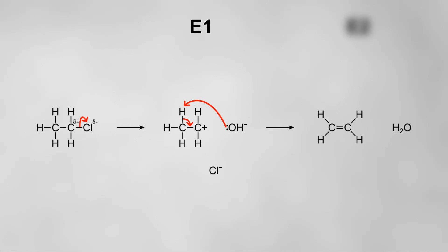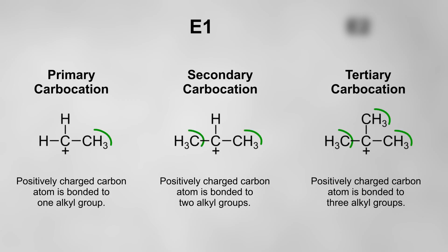Similar to an SN1 reaction, the biggest barrier for an E1 reaction is the formation of the carbocation. Remember, alkyl groups are electron donating, meaning they'll push electrons towards the positively charged carbon atom.